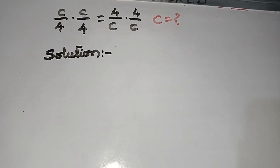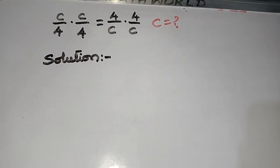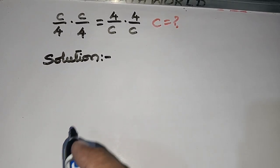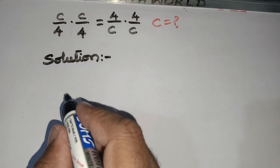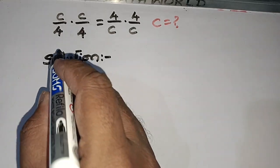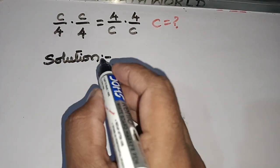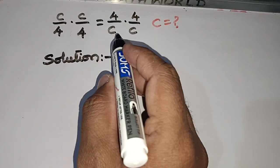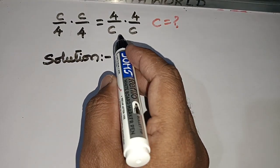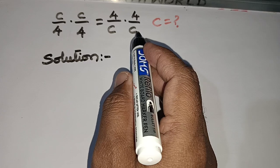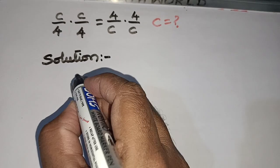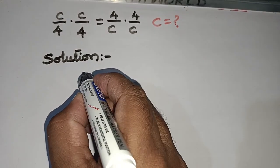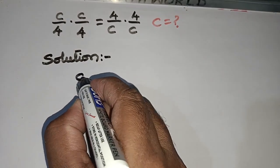Hello, welcome to Ababil Math World. Today we are going to solve the problem c/4 · c/4 = 4/c · 4/c. That is the given equation.